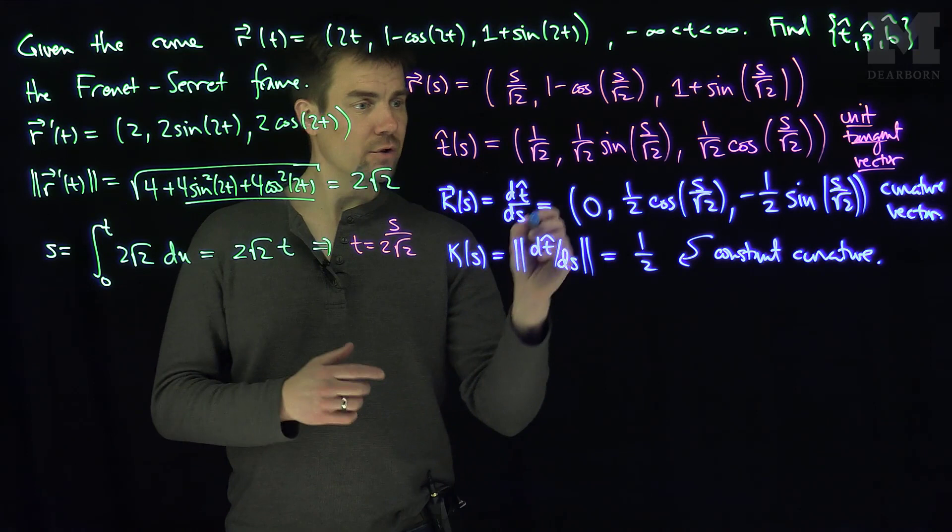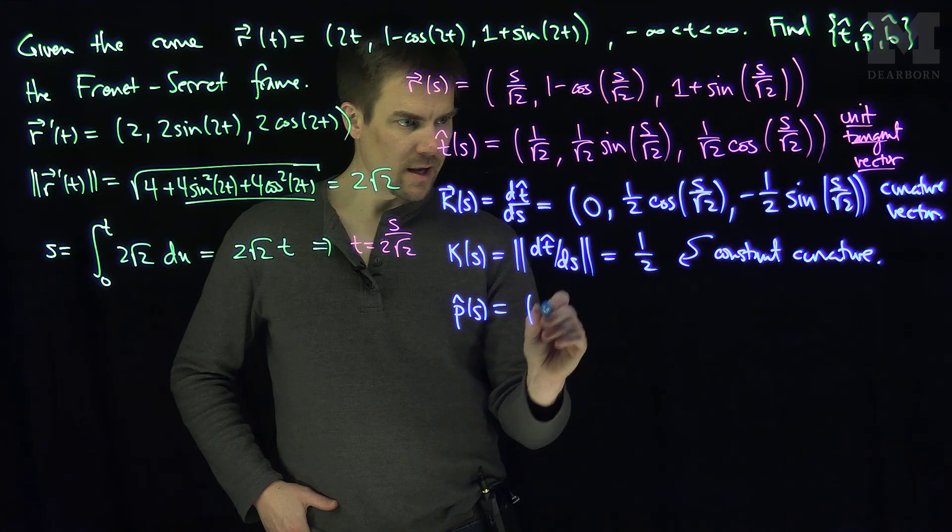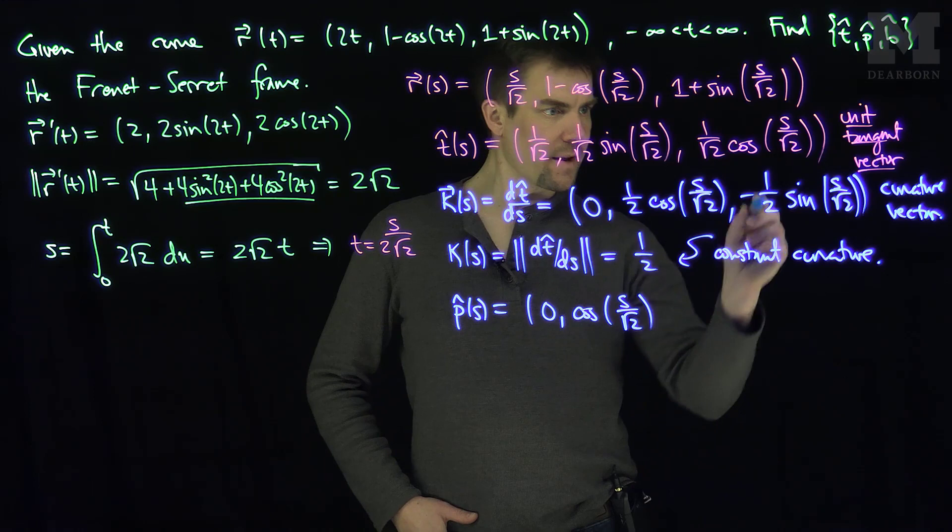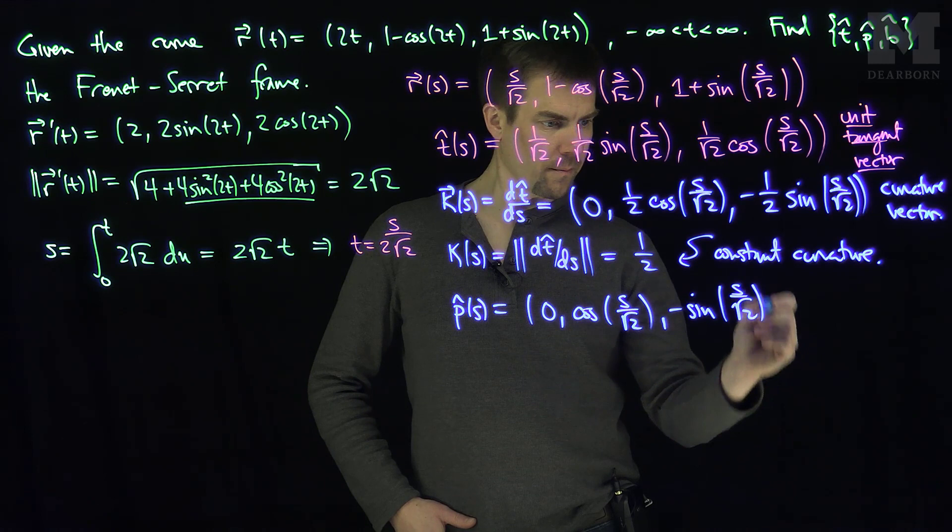To find the principal normal vector, we divide the curvature vector by the curvature. So P-hat(s) = (0, cos(s/√2), −sin(s/√2)).